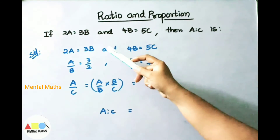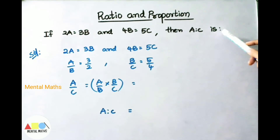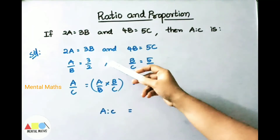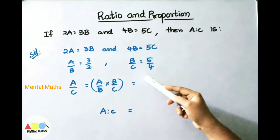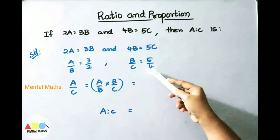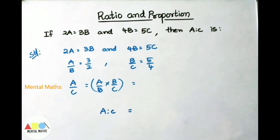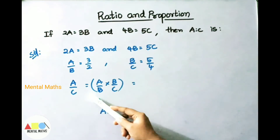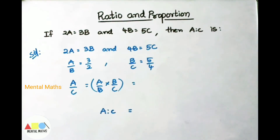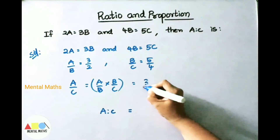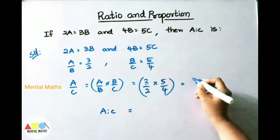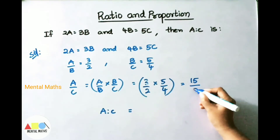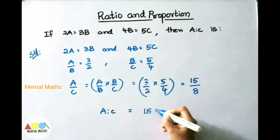If 2A equals 3B and 4B equals 5C, then A is to C is how much? From the equations: A/B equals 3/2 and B/C equals 5/4. A is to C can be written as A/C equals A/B multiplied by B/C. That is 3/2 multiplied by 5/4. Multiplying numerator 3 by 5 gives 15, and denominator 2 by 4 gives 8. Therefore A is to C is 15 is to 8.